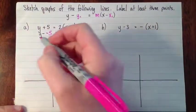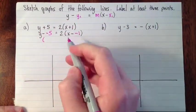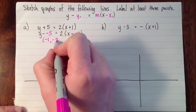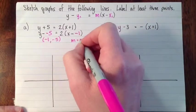So what this tells us is that the point that's on the line, so the x₁ is -1, and y₁ is -5. And then the slope of the line is this number right here, the 2.